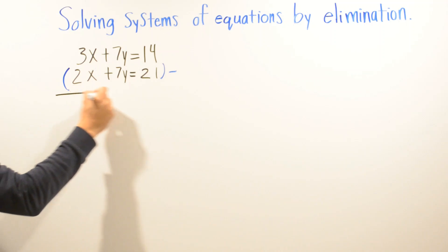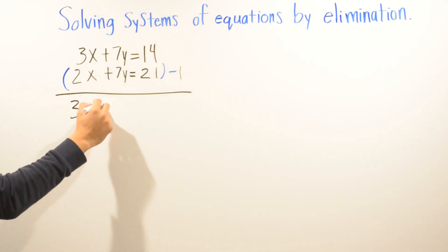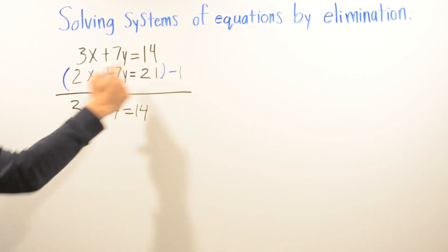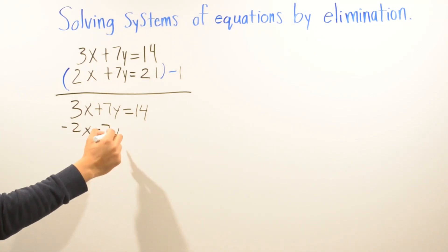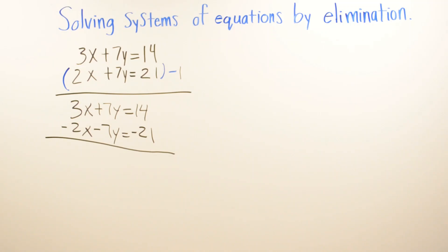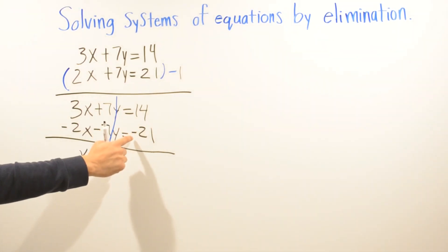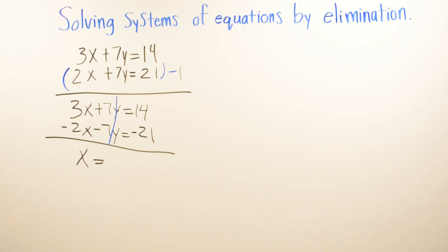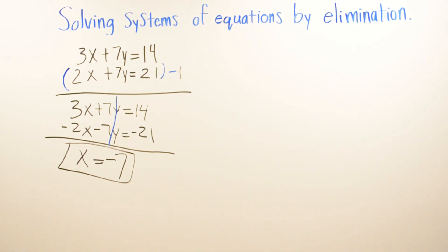We're going to multiply the second equation by negative one. We bring down the first equation: 3x plus 7y equals 14. Then the second equation becomes: negative 2x, negative 7y, equals negative 21. Now we add the equations — the 7y and negative 7y cancel. We combine 3x minus 2x to get x by itself, and 14 minus 21 gives us x equals negative 7.